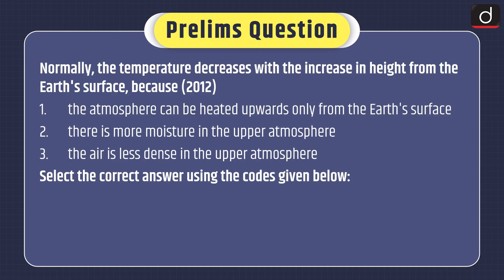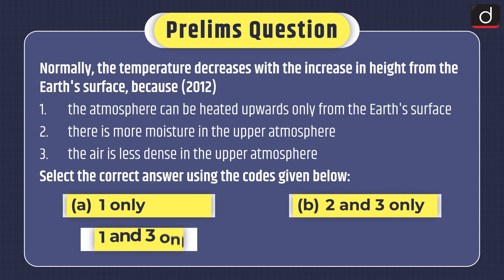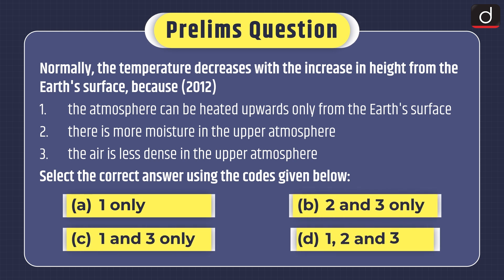Prelims practice question: Normally the temperature decreases with the increase in height from the earth's surface because — (1) the atmosphere can be heated upwards only from the earth's surface; (2) there is more moisture in the upper atmosphere; (3) the air is less dense in the upper atmosphere. Select the correct answer: 1 only; 2 and 3 only; 1 and 3 only; or 1, 2, and 3.